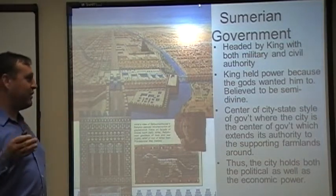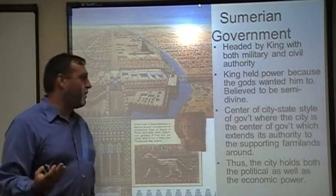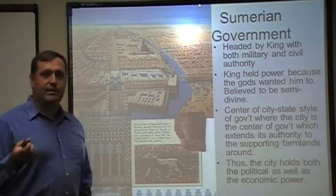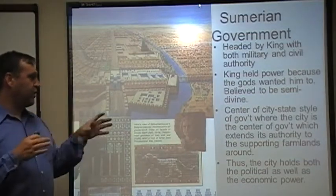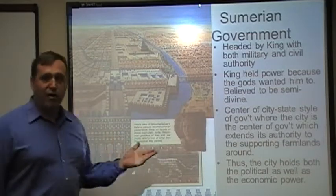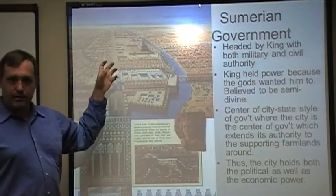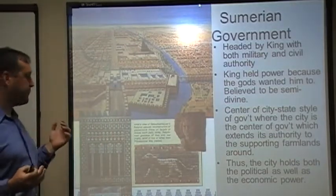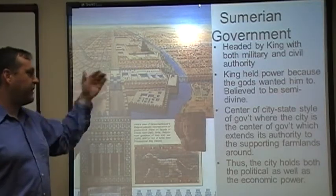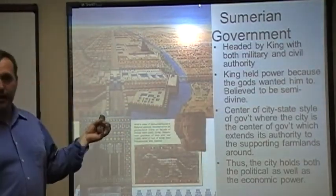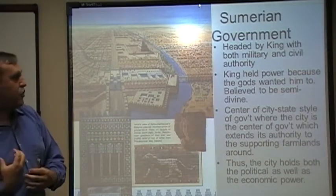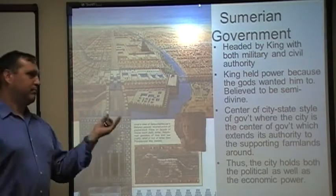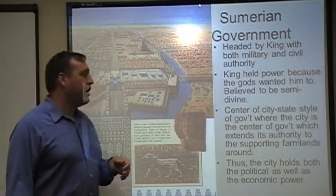You've got a pagan-style religion where the king was part of this religious system. Sumer was the center of this city-state style of government — the city is the center of government and social organization, extending its authority out through the surrounding farmlands. However far out those bounds can go that they can defend and maintain control over, that's where the city-state's extent goes. The city holds both political and economic power because the farmland area comes into the city to sell its surplus of agriculture and trade that for goods the city can produce — shoes, tools, clothing, etc. They're also going to use the river systems for trade with other settlements.